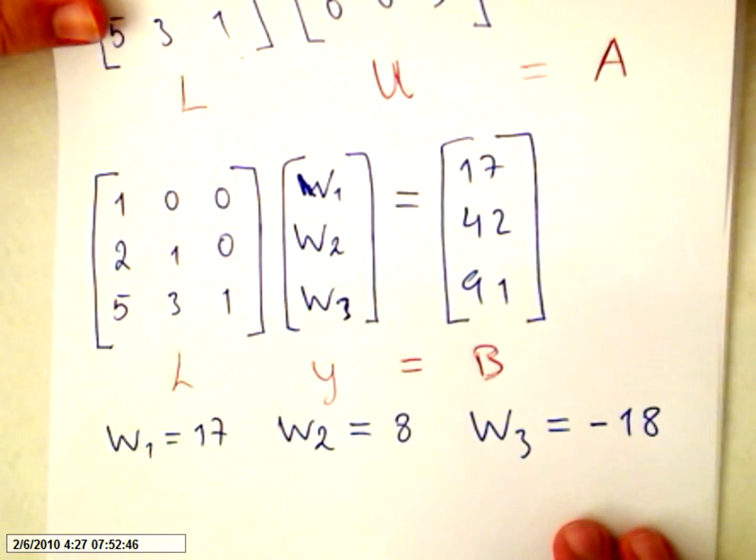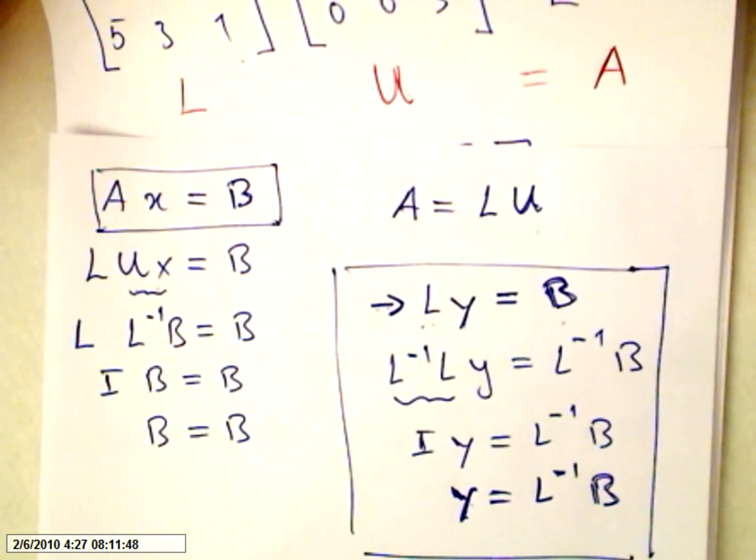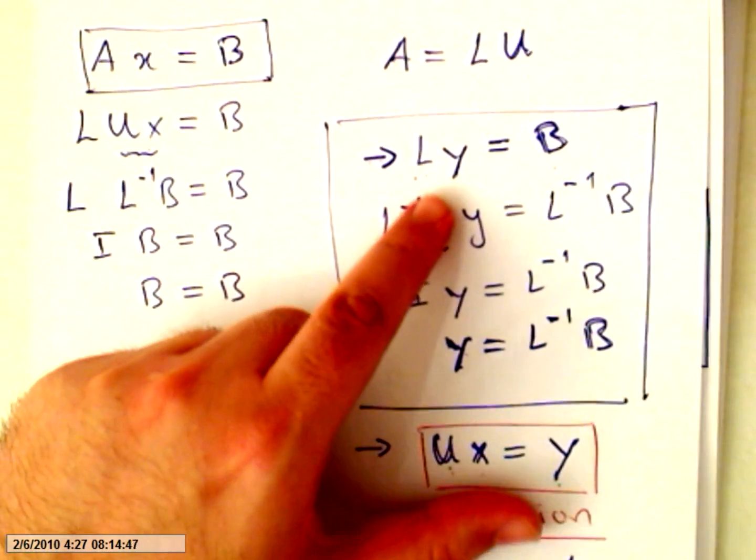And y3 will equal minus 18. So we know the lower matrix, we know this y and we know b, so these values. This is our y matrix that we need. This step is done.